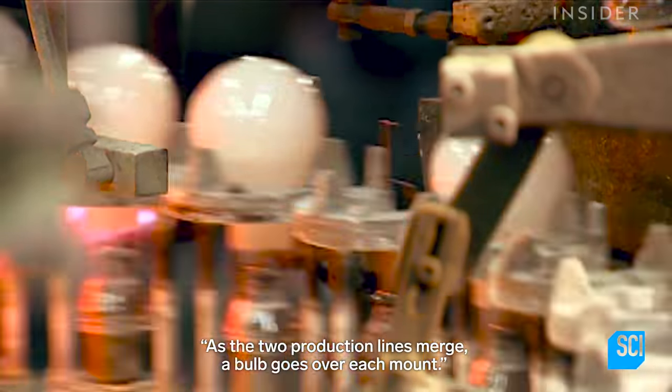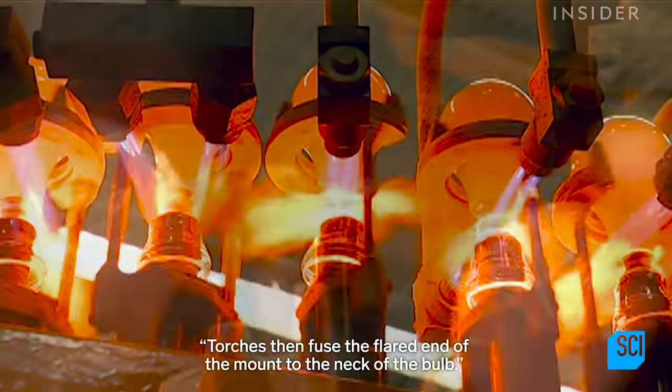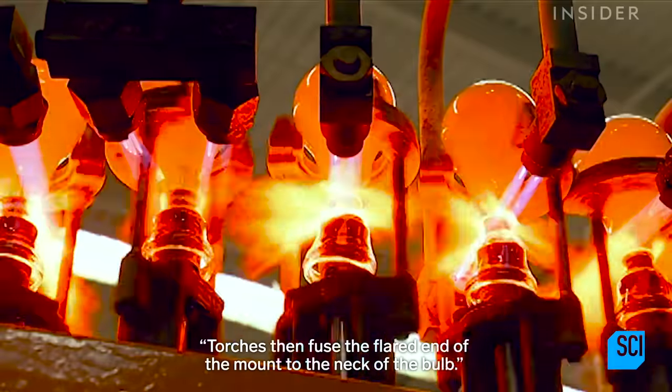As the two production lines merge, a bulb goes over each mount. Torches then fuse the flared end of the mount to the neck of the bulb.